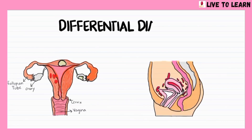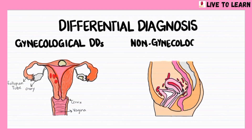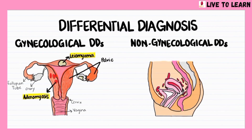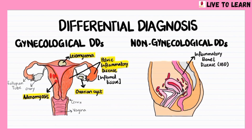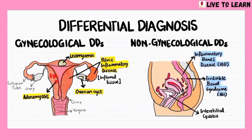The differential diagnosis of endometriosis can be classified as gynecological and non-gynecological differentials. The gynecological differentials include leiomyoma, which is a benign smooth muscle tumor of the uterus, adenomyosis, in which endometrial tissue grows into the myometrium, pelvic inflammatory disease, which is an infection of the female reproductive organs, or an ovarian cyst. Non-gynecological differentials include inflammatory bowel disease, irritable bowel syndrome, or interstitial cystitis.